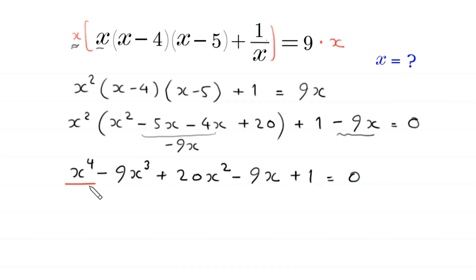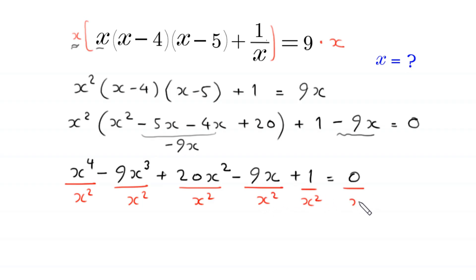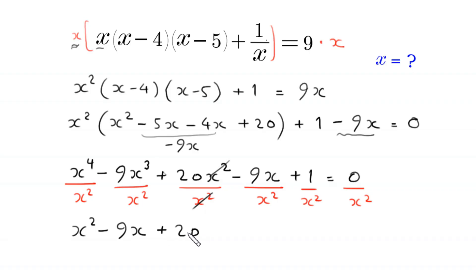Now we divide both sides of this equation by x squared — we divide each term by x squared. So x to the power 4 over x squared becomes x squared; negative 9x cubed over x squared becomes negative 9x; 20x squared over x squared gives plus 20; negative 9x over x squared becomes negative 9 over x; and 1 over x squared remains as 1 over x squared. All equal to 0.